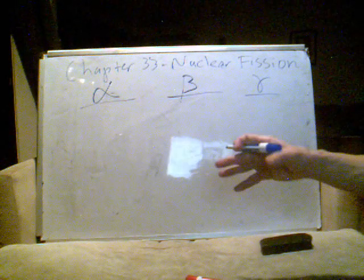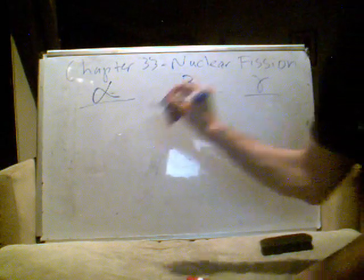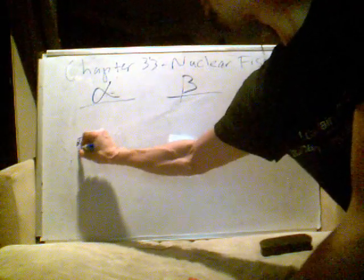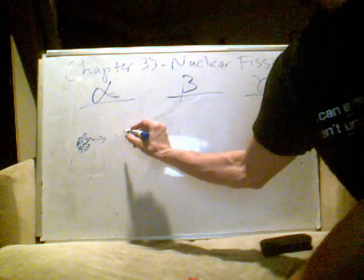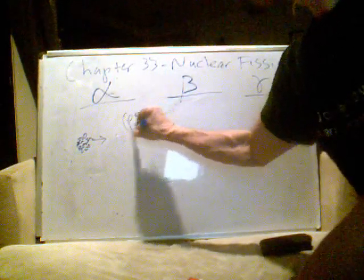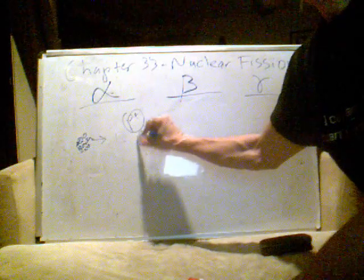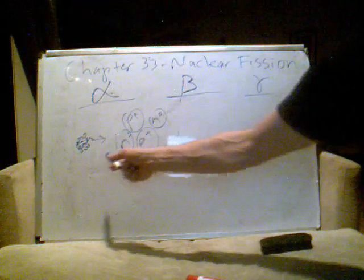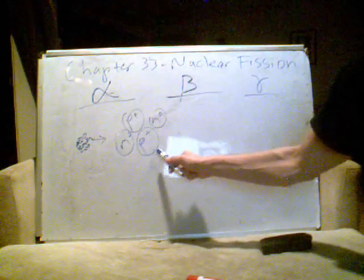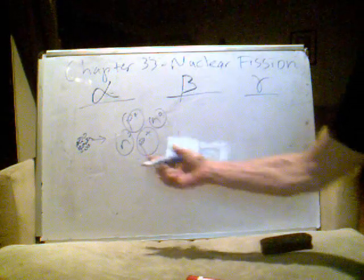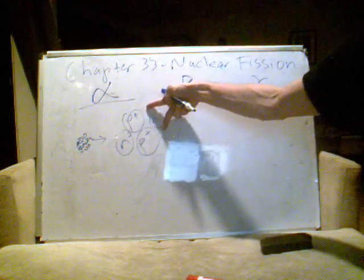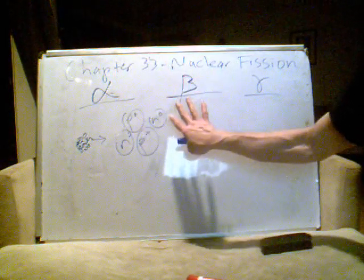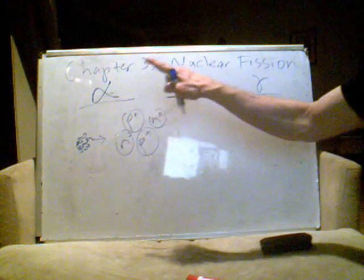The alpha decay is the emission of this thing that we call an alpha particle. So, let's say you have a nucleus, right? It has a bunch of particles in it, some protons, some neutrons, and it emits an alpha particle. Now, an alpha particle is two protons and two neutrons. So, if this nucleus emits these four particles, what's going to happen to the nucleus? Well, its atomic number is going to decrease by two, right? Because there are two protons in this alpha particle, this stable helium nucleus that's getting emitted here.